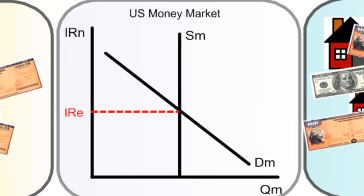In a previous lesson we introduced the money market, which we see here. The money supply curve represents the total supply of liquid money in a nation's economy — this refers to cash, checkable deposits, and savings accounts. The money demand curve represents the demand for money as an asset and as a medium of exchange. The supply of money is not related to the interest rate; rather, it is determined by the monetary policy of a nation's central bank.